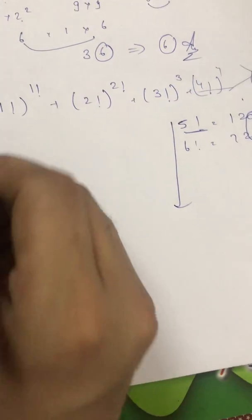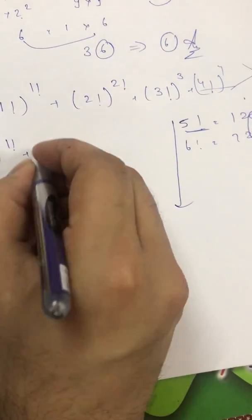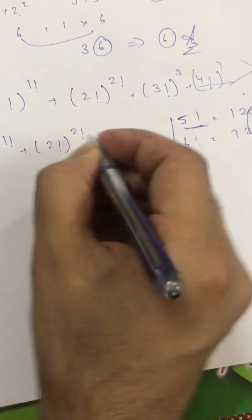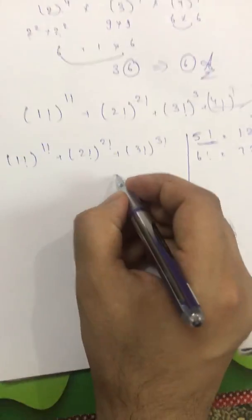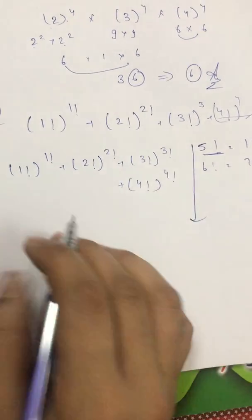What I will check? Factorial 1 raised to the power factorial 1 plus factorial 2 raised to the power 2 factorial plus factorial 3 raised to the power 3 factorial plus factorial 4 raised to the power 4.